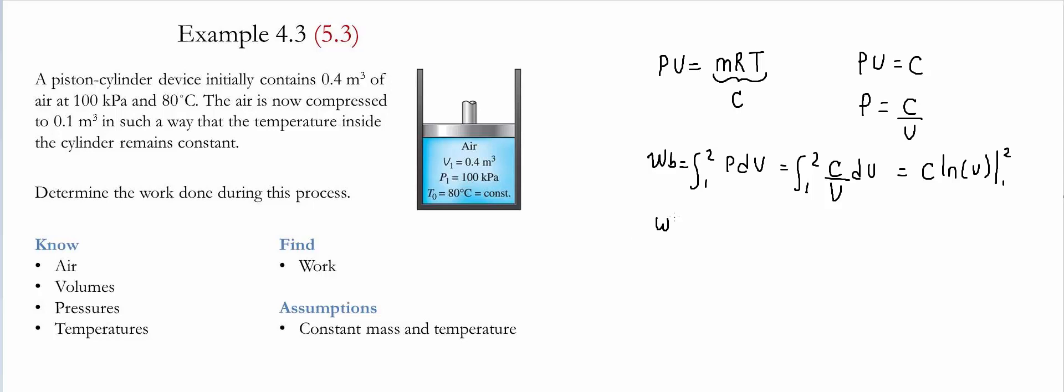Therefore, the boundary work is simply going to be the constant times natural log of volume two minus natural log of volume one, which is simply constant times natural log of volume two divided by volume one.